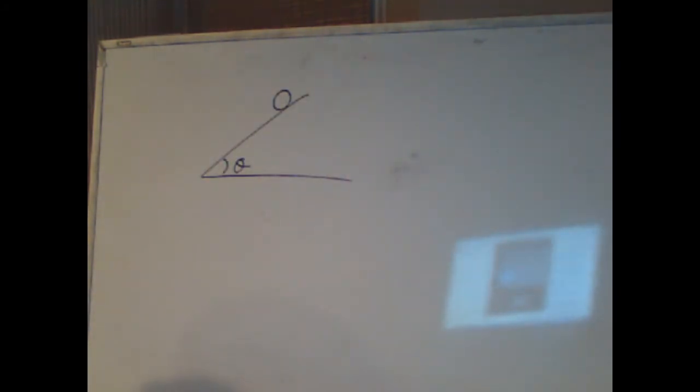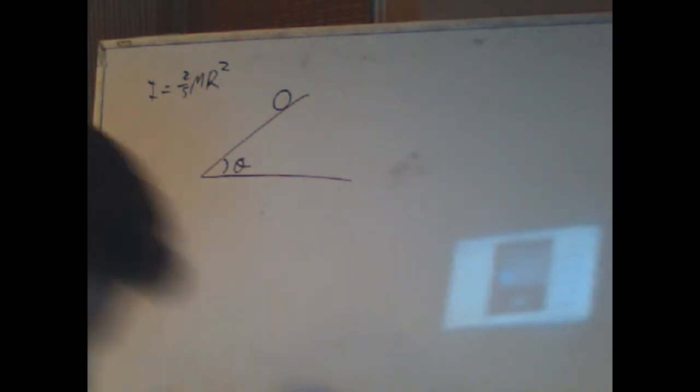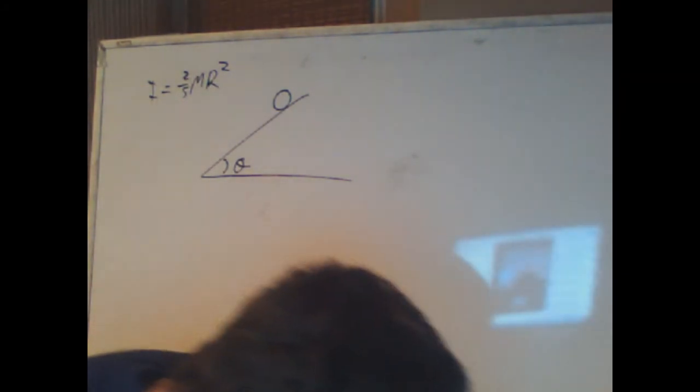Our question is fairly simple at first. We have a sphere rolling down a plane but not slipping. Its moment of inertia is 2/5 m r squared.